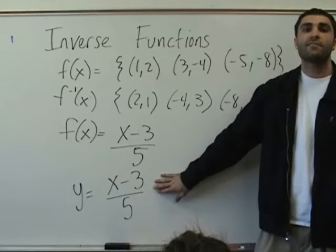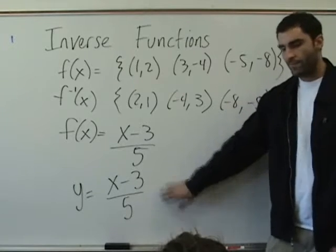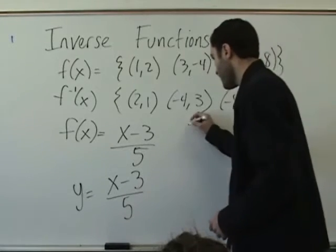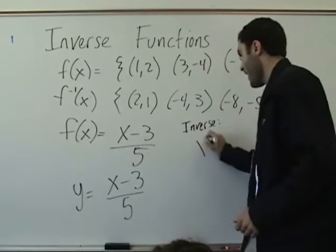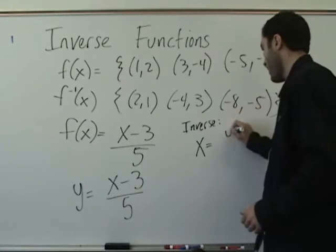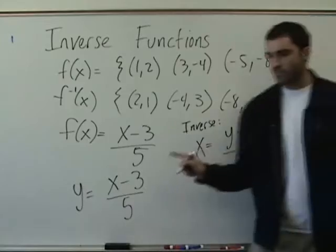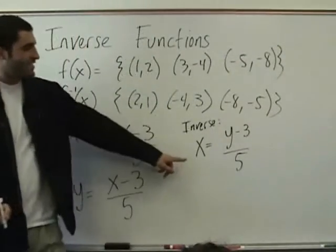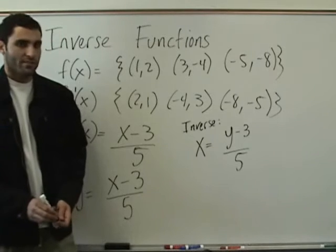Yeah? Say it loud. X equals y minus 3 over 5. Correct. Okay. Inverse. You just replace y with x. Good job, darling. x equals y minus 3 over 5. Okay. This is the beginning. This is the beginning. I was on my belt. Of the inverse function.